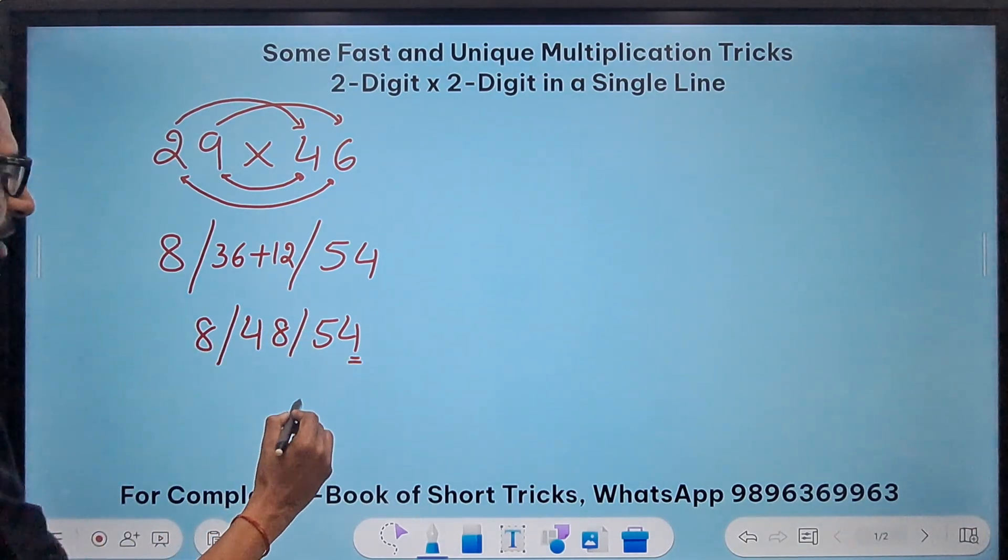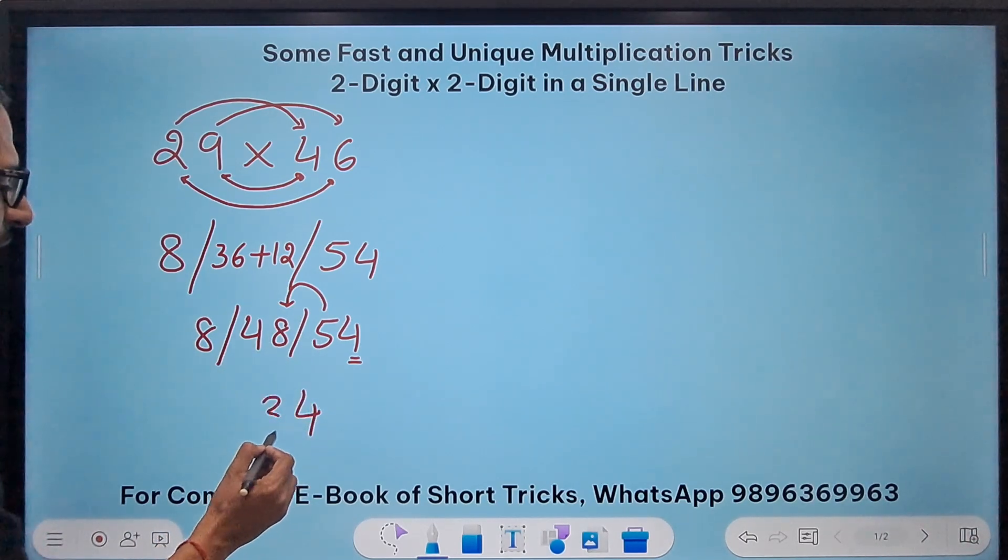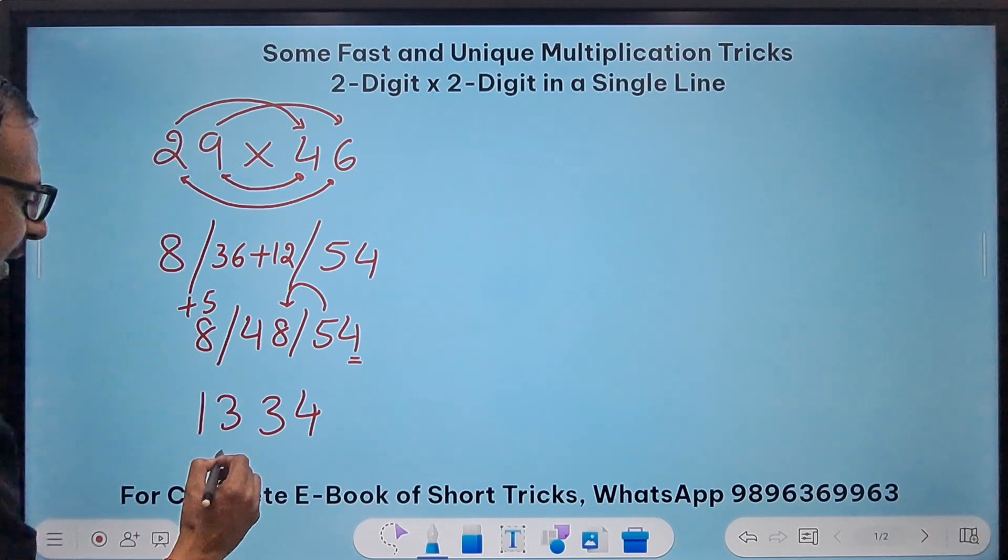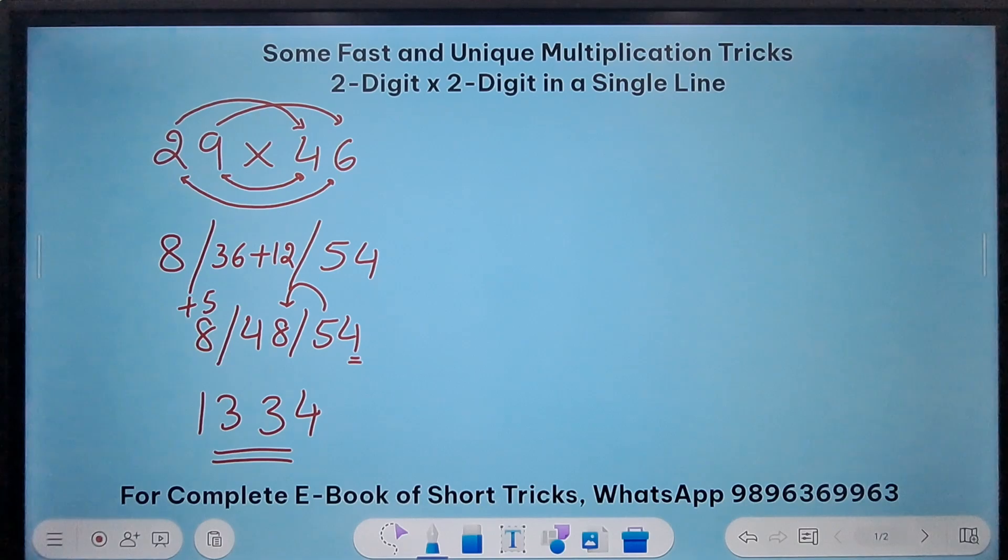Now retain the unit digit 4, carry forward the 10th digit 5 so 48 plus 5 is 53 so 3 and 5 gets added to 8 gives us 13. So 1334 is the product of 29 and 46.